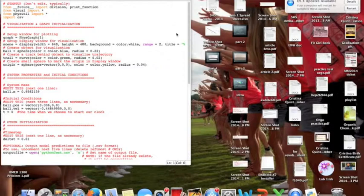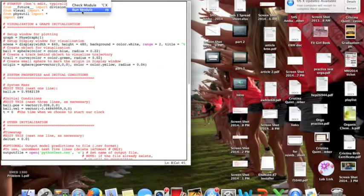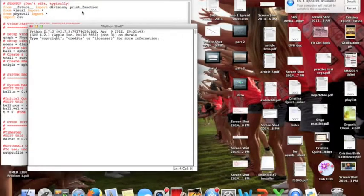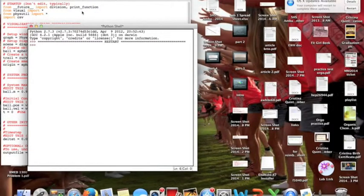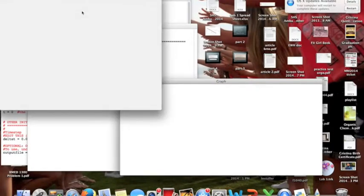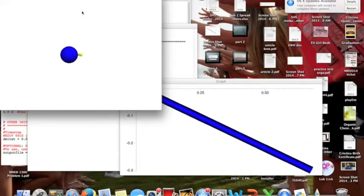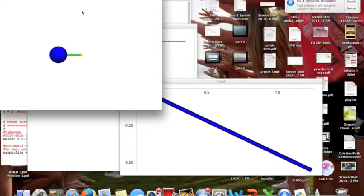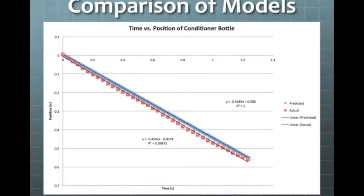When I run the code, a computational model of the motion of the bottle shows. At first glance, the graph looks like the graph produced using Tracker. Using the data from Tracker in VPython, a comparison graph was created. At the beginning, the two graphs were identical, as seen here.